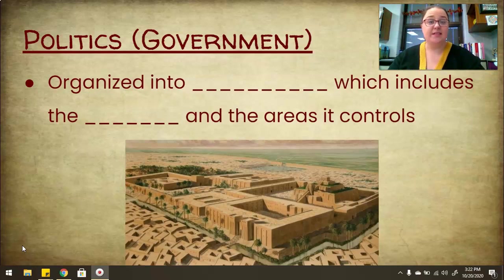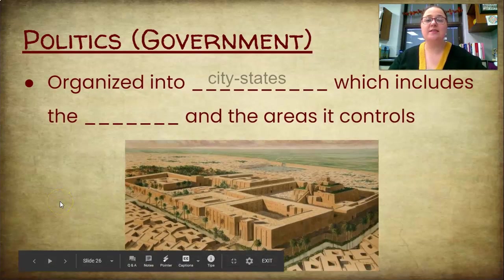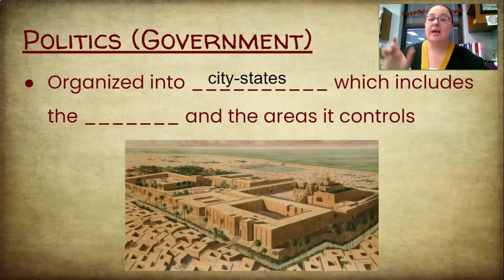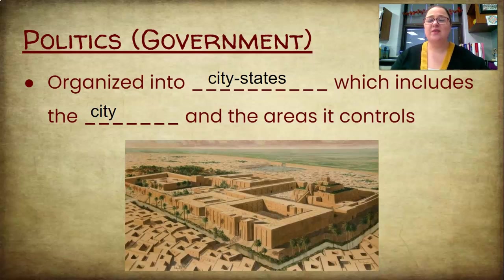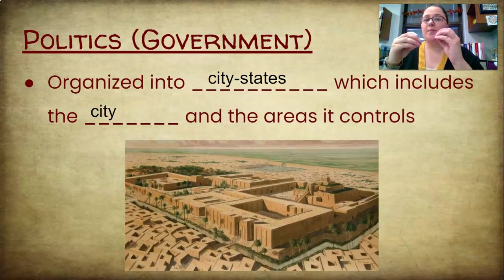We're going to look specifically today at the city-state. In Mesopotamia, the civilization was set up into city-states. A city-state is a compound word which included the city and the area that it controlled. It's very different than what we have today, where we have a city inside of a state inside of a country. The city-state combines the city and the state into one thing.